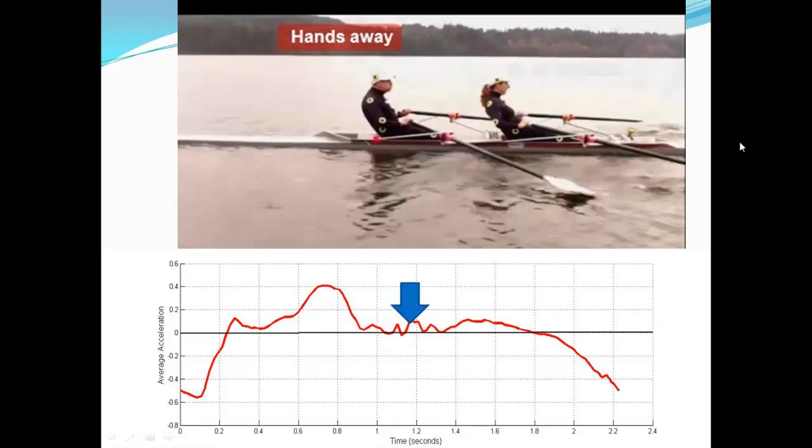The bumpy part of the graph is during our arms away and rock over. I think the bumps are a result of the two of us not swinging out of the bow together, or perhaps not extracting the blade at exactly the same time. This part of the curve should be as smooth as possible so as not to disturb the run of the boat — holding our legs down longer while we rock over will help smooth it out. The bumps in the acceleration curve indicate rapid changes in the velocity of the boat, and in general we want to minimize variation in boat speed during the stroke. This is because the power required to maintain a constant velocity depends on the cube of the velocity — if you want to double the boat velocity, you need eight times more power — meaning large variations in boat speed cost energy.